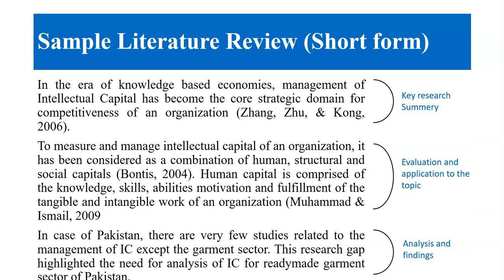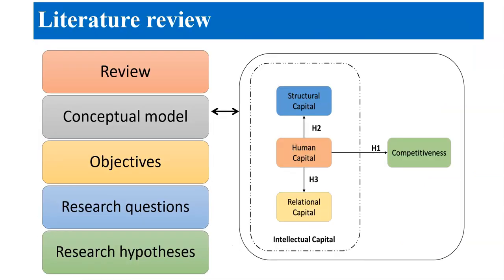Looking at a sample literature review, there are three sections: key research summary, evaluation and application to the topic, and analysis and findings. After reviewing the literature and identifying a gap, you develop a conceptual model. For example, with human capital at the center alongside structural capital, relational capital, and competitiveness, the literature review guides a study of Pakistan's ready-made garment sector to find weaknesses and give recommendations. Here, human capital is the independent variable and the other three are dependent variables.